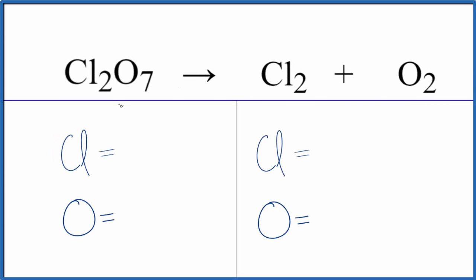In this video, we'll balance the equation for the decomposition of Cl2O7 into Cl2 plus O2. This is dichlorine heptoxide, and we get chlorine gas and oxygen gas in the products.